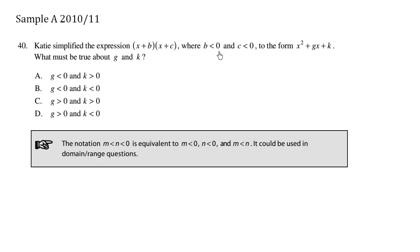So we know that b < 0, and c < 0. So overall, b is going to be a negative number, and c is going to be a negative number. We know that when using FOIL,